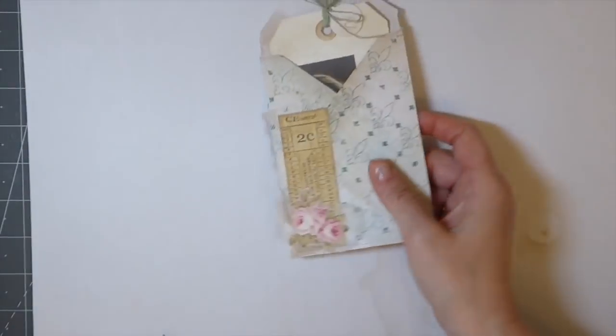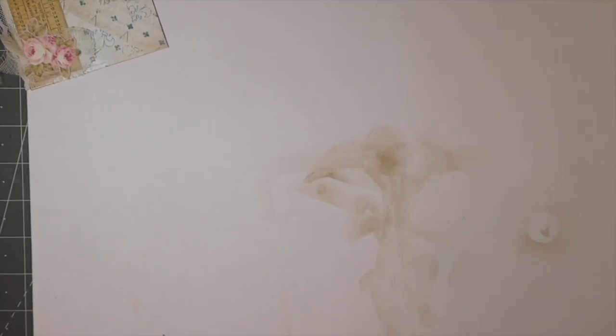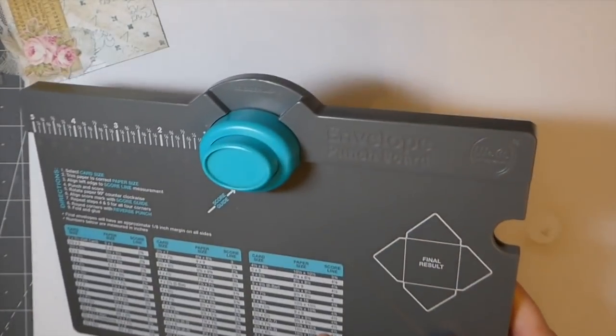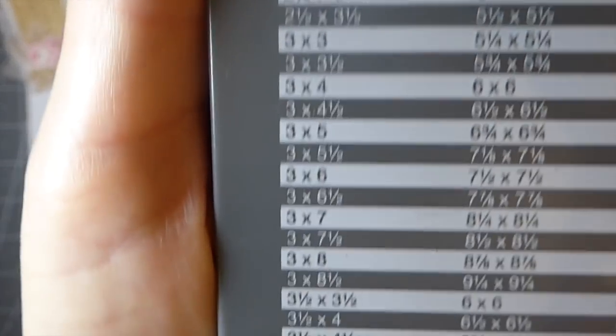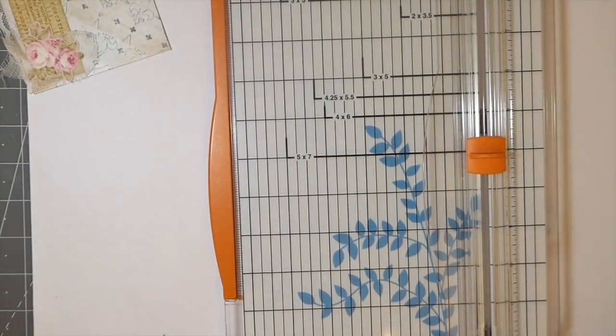So let's just get started and you'll see how fast this goes. Then you can just take the idea and tweak it yourself. What we're going to need is an envelope punch board. I am going to just go ahead and cut the paper that I'm going to use. I've got the dimensions written down here - it's for a three and a half by five card, so you need a seven and a quarter by seven and a quarter sheet.